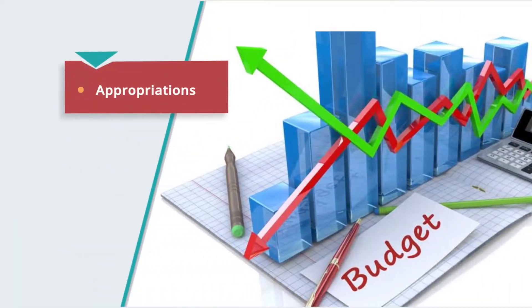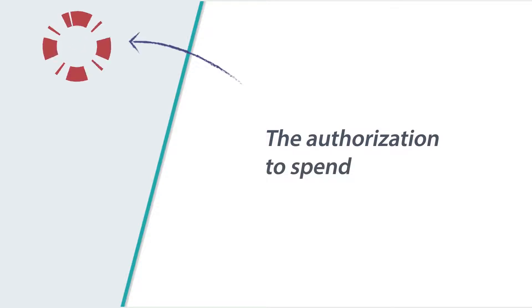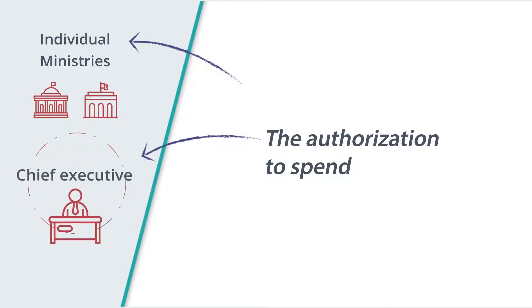In legal terms, the government budget, or appropriations, is the budget approved by the legislature and subsequent additions to it. This either orders the executive to make the specified expenditures or authorizes the executive to make expenditures up to the amounts specified. The authorization to spend may be given to individual ministries or departments, or it may be granted specifically to the chief executive or his representative, who retains the freedom to subsequently authorize spending by the government.